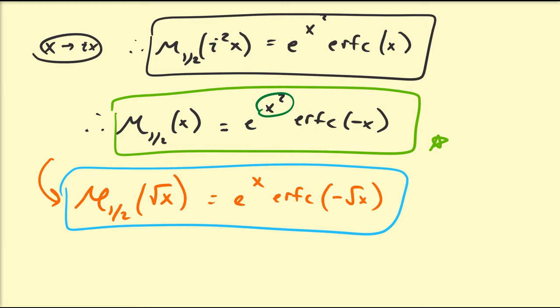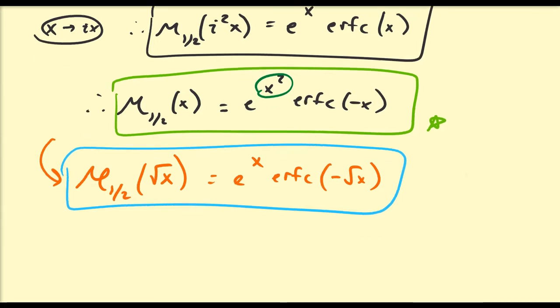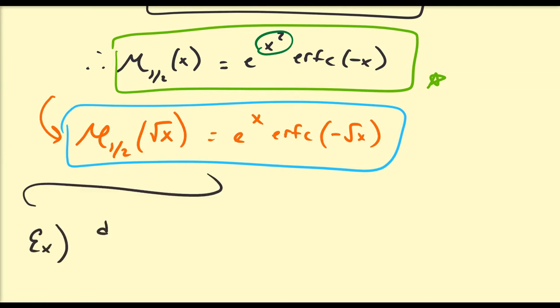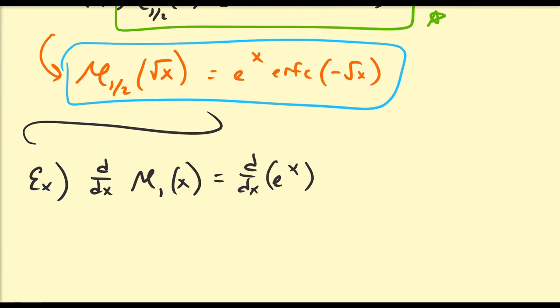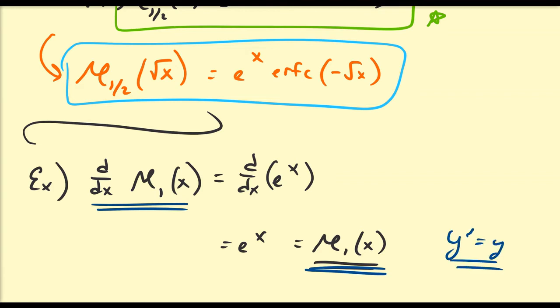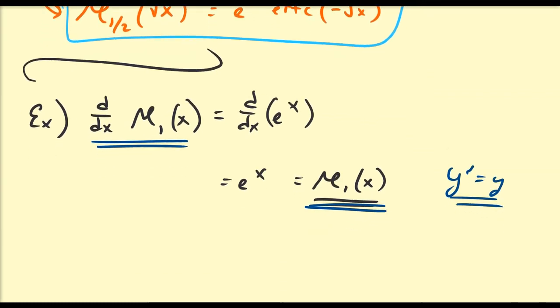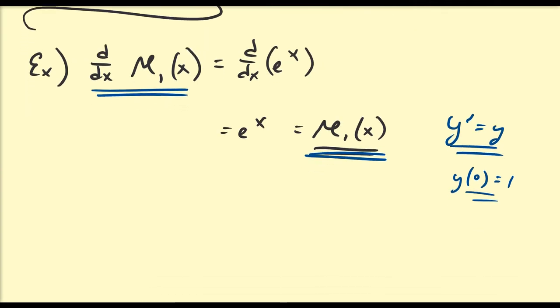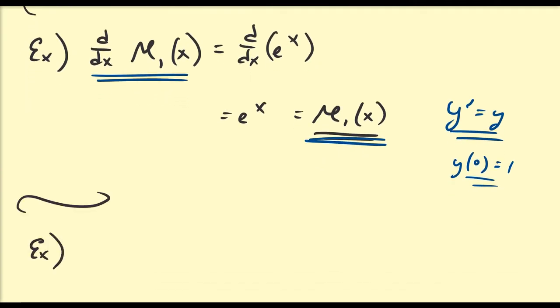Those are some representations for the Mittag-Leffler function at multiple parameters, including fractional values. Now let's look at derivatives. We know E_1(x) = e^x, and the derivative of e^x is e^x, so d/dx E_1(x) = E_1(x). This means E_1 satisfies the differential equation y' = y with initial condition y(0) = 1.